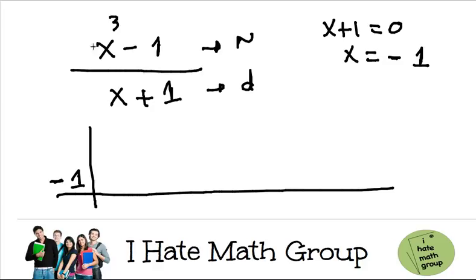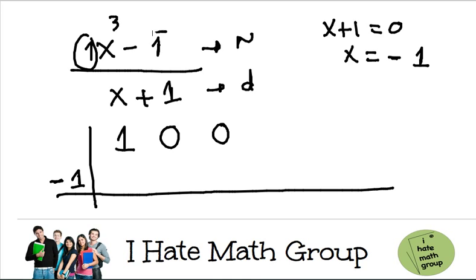Your x cubed coefficient is just 1. I don't have the x squared term, so I'm going to put a 0. I don't have the x term, so I'm going to put another 0. But I do have the constant, which is negative 1. Now we can go ahead and do our synthetic division.